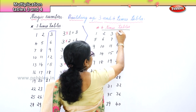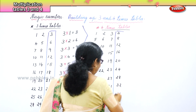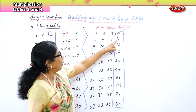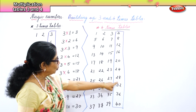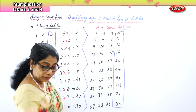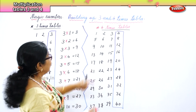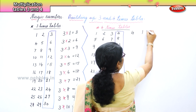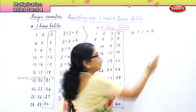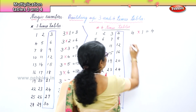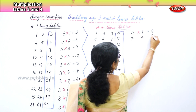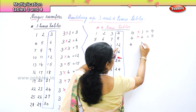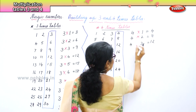Now look at the last numbers: four, eight, twelve, sixteen, twenty, twenty-four, twenty-eight, thirty-two, thirty-six, forty. Let's build the tables. Four, how many times? Ones are four — four ones are four. Next: four twos are eight. And we got the sign. Next — four threes are twelve.